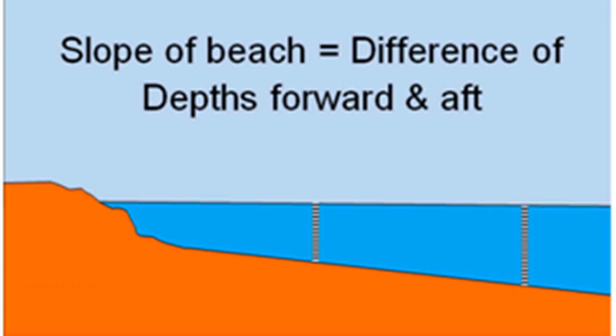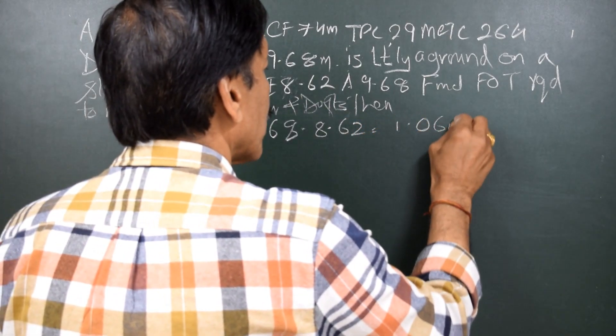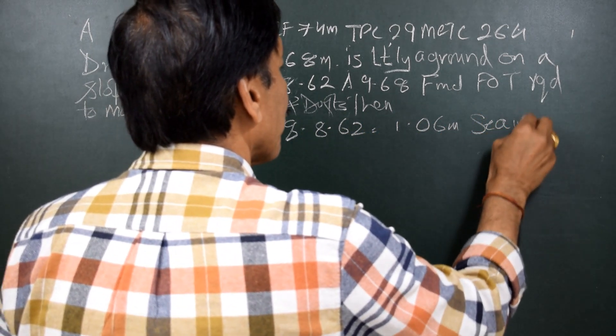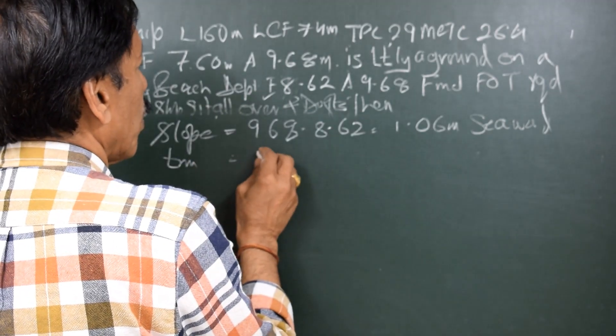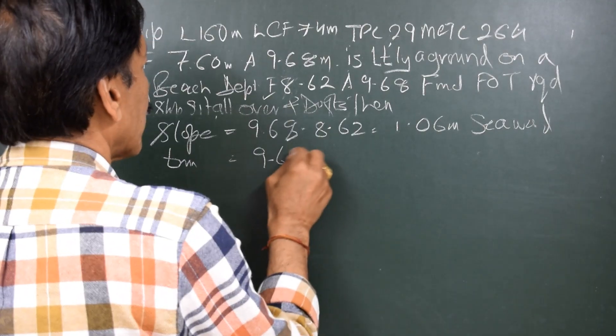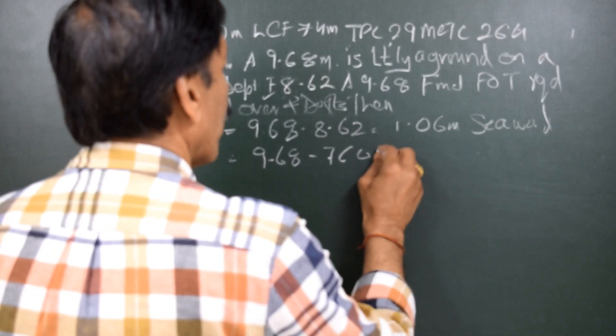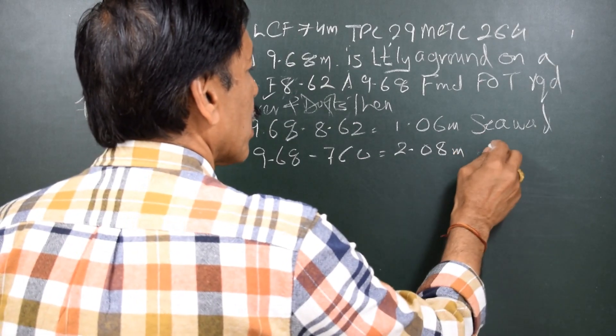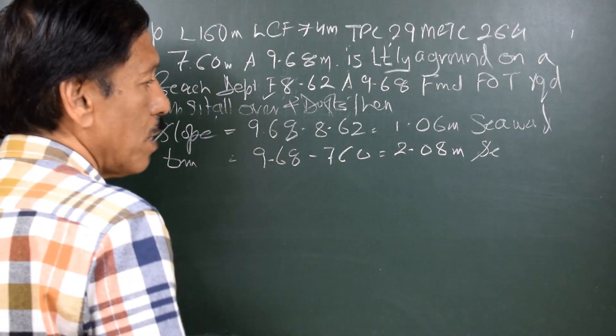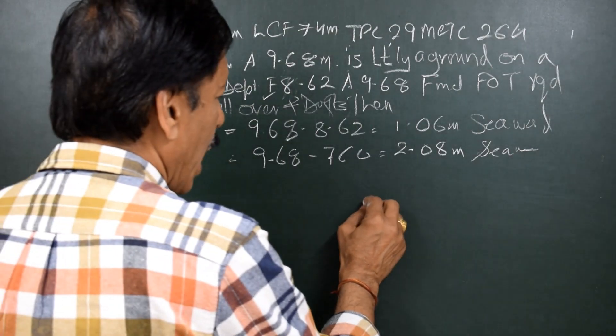So slope of the beach is equal to 9.68 minus 8.62 equal to 1.06 meters seawards. Now trim of the vessel is equal to 9.68 minus 7.60, so that is equal to 2.08 meters, once again aft trim which means seawards.